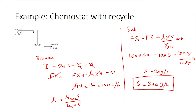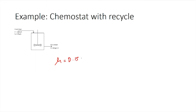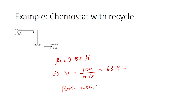Now that we have the substrate concentration, we calculate mu using Monod's model: mu equals 0.18 times S divided by (0.5 plus S), giving a value of 0.158 hour inverse. We can then calculate the volume as F divided by mu, which is 100 divided by 0.158, giving 631.9 liters. Since the chemostats are available only in multiples of 50, the reactor to be installed would be a 650-liter reactor. This is the volume required if we do not have any recycle.